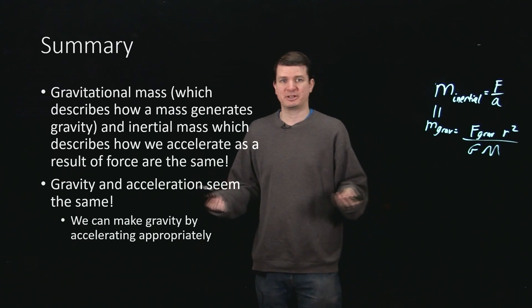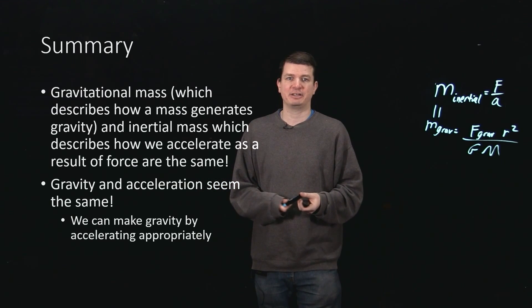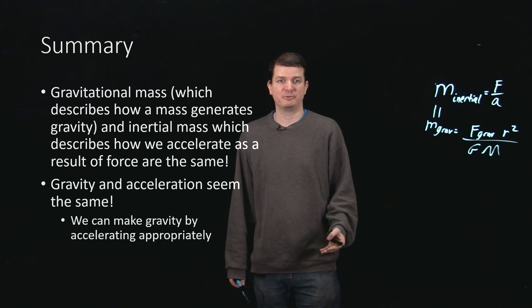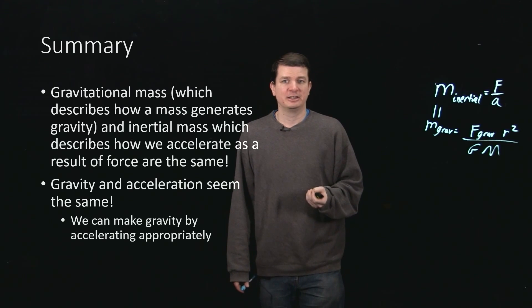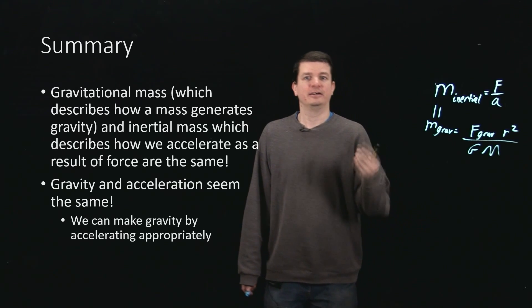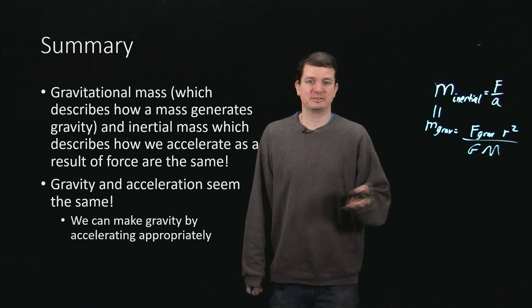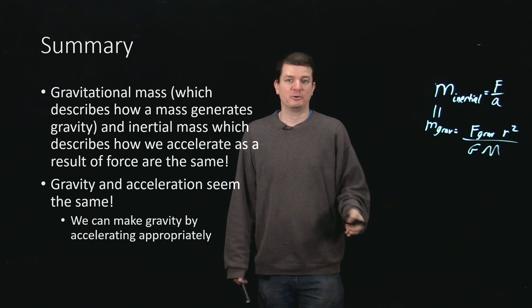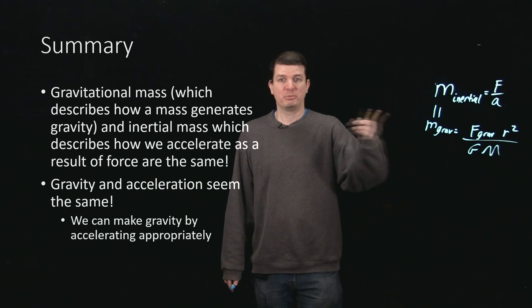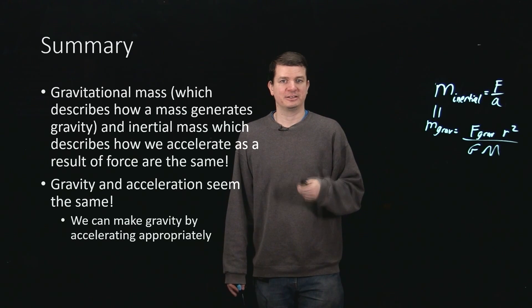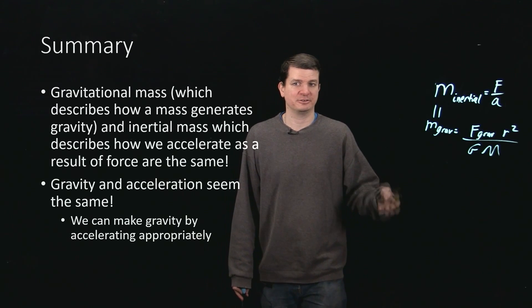So gravitational mass describes how mass generates gravity, and the inertial mass, which describes how it will accelerate as a result of experiencing some force, are actually the same. Which means that to some degree gravity and acceleration are interchangeable or are the same thing. And that of course means that we can do this cool thing of creating artificial gravity either by accelerating constantly or in a more feasible way, by rotating at just the right rate so that the centripetal acceleration matches the gravitational acceleration you're trying to mimic.